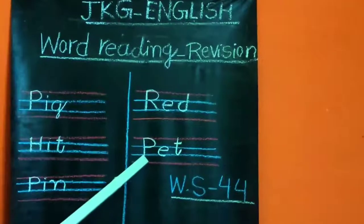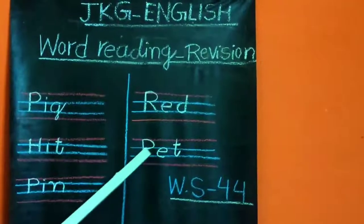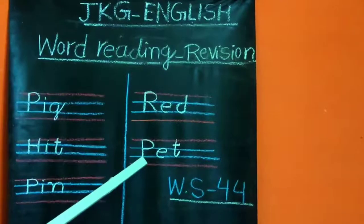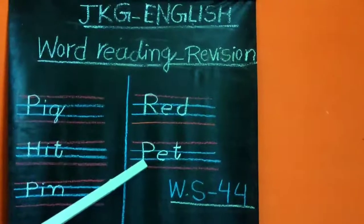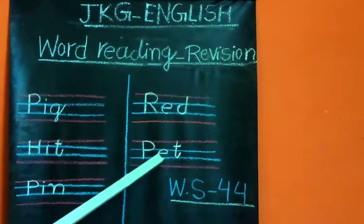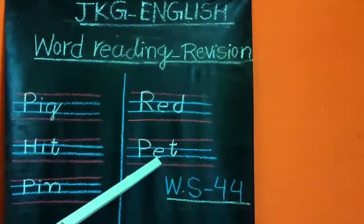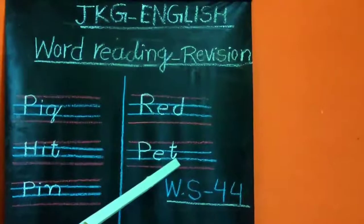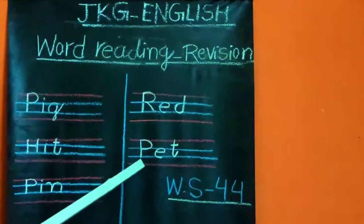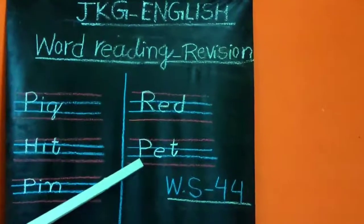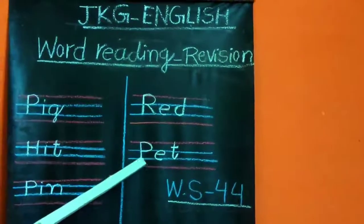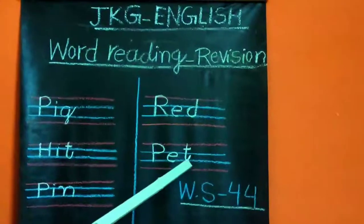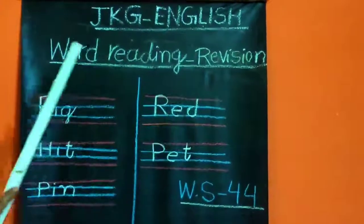Now here I have written 'pet'. The beginning sound of this letter is 'pa', the middle sound is 'e', and the end sound is 'ta'. So how we will pronounce this letter? Pa, e, ta — pet. Pet means paal tu jaan word.